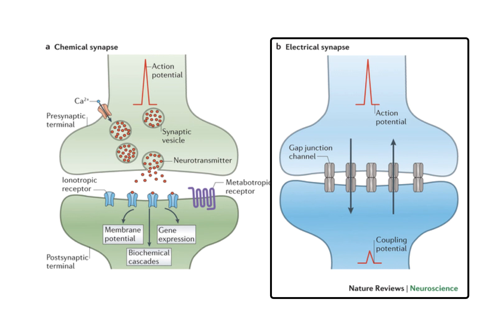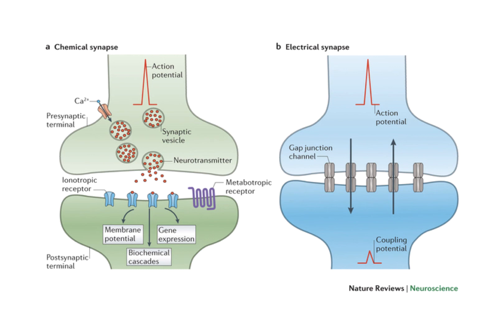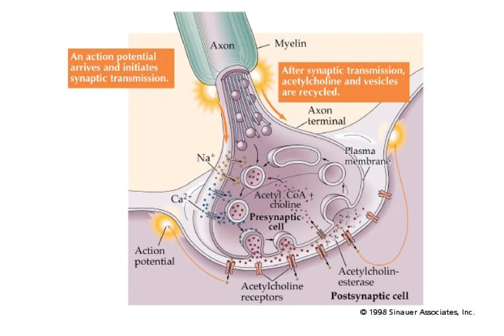That calcium increase causes a vesicle with the neurotransmitter to fuse with the membrane and release the neurotransmitter into the synapse. Those neurotransmitters attach to a receptor, which then stimulates other things in the postsynaptic cell, including a change in membrane potential if there's going to be an action potential, biochemical cascades, and sometimes gene expression. There are also electrical synapses which have channels that join the two cytosols together, allowing sodium ions to pass through and stimulating an action potential in the adjoining cell.